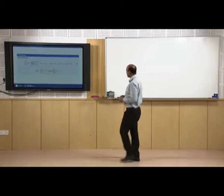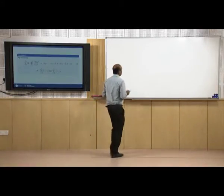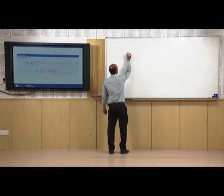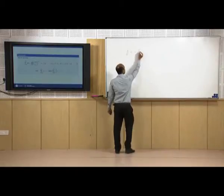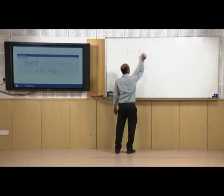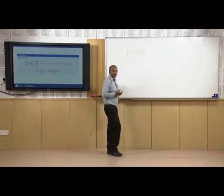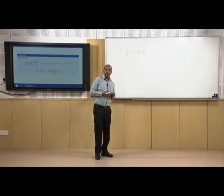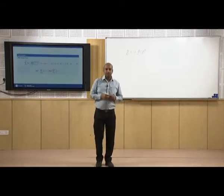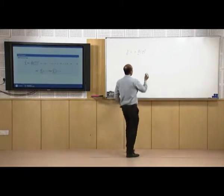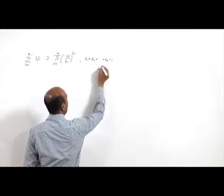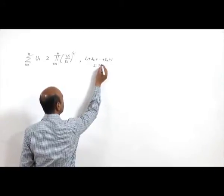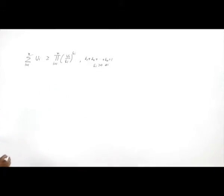Now let us discuss this again. We already know that the sum of U_i for i from 1 to n is greater than or equal to the product of (U_i / delta_i)^{delta_i} for i from 1 to n. This was obtained from the arithmetic-geometric mean inequality, and it holds when the sum of delta_i equals 1 and all delta_i are strictly greater than 0.